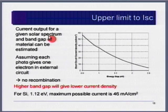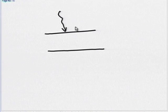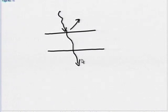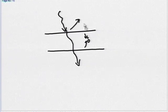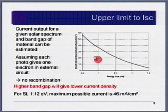If you assume each photon gives one electron in the external circuit, that is the theoretical highest limit. In reality, not every photon gives one electron: some photons get absorbed far from the diffusion length and recombine, some get reflected, some get transmitted. These are losses due to reflection, recombination, and transmission. The highest limit is achieved when every photon gives one electron.